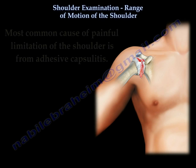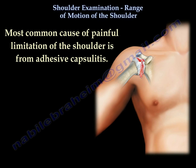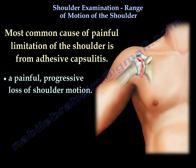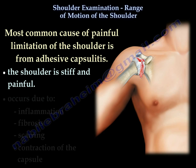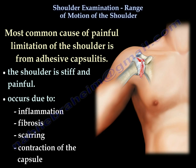The most common cause of painful limitation of the shoulder is from adhesive capsulitis. Adhesive capsulitis is a painful, progressive loss of shoulder motion that affects both active and passive movement of the shoulder joint. The shoulder is stiff and painful, and the condition occurs due to inflammation, fibrosis, scarring, and contraction of the capsule.